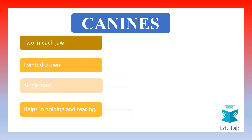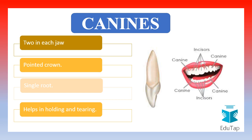Canines are 2 in each jaw, so they are a total of 4 inside the mouth. They have a pointed crown and a single root. They help us in holding and tearing the food. The positioning of the canines is shown in the figure — they are the teeth placed next to the incisors.